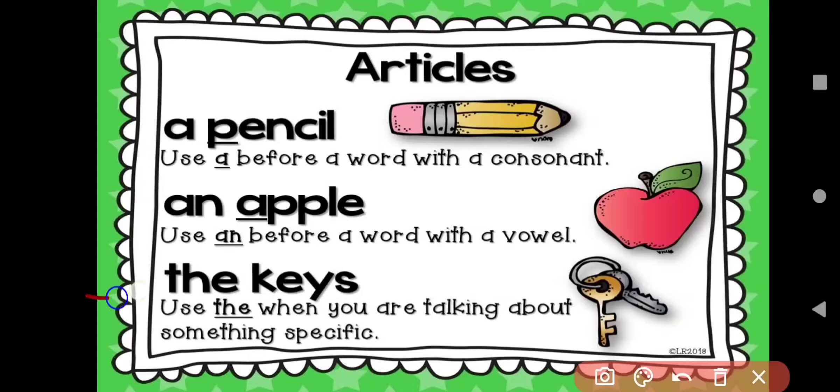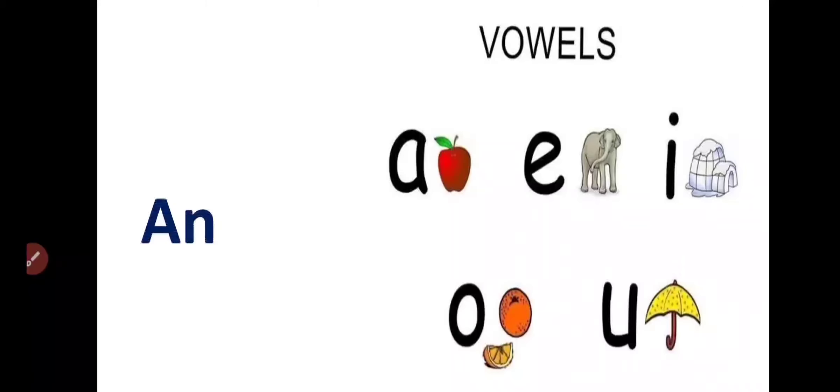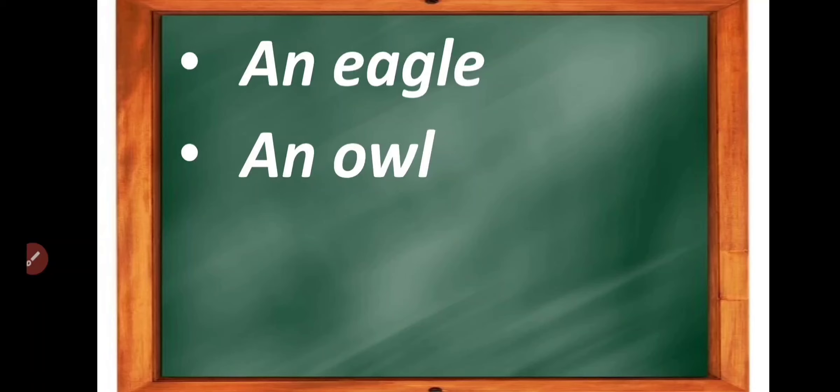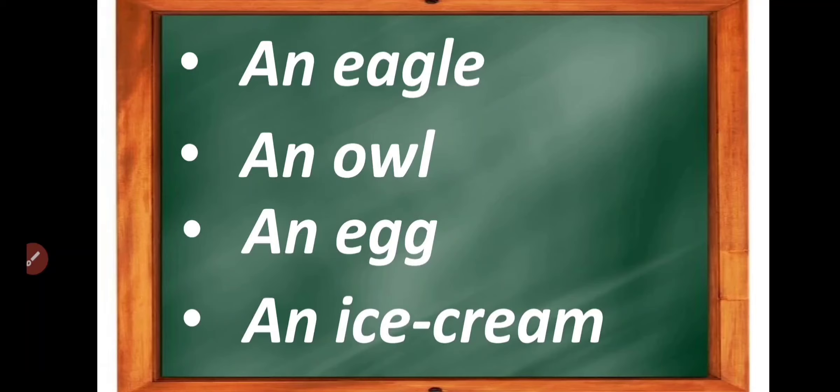And next, the keys. Use the when you are talking about something specific. We use the for special or particular things. Like the keys. So always remember which words start with vowel sound, that time we will use an. Like here, an eagle. Eagle starts with E and E is a vowel here, so we will use an. An owl, we have o, or is here vowel. And next, an egg, an ice cream.